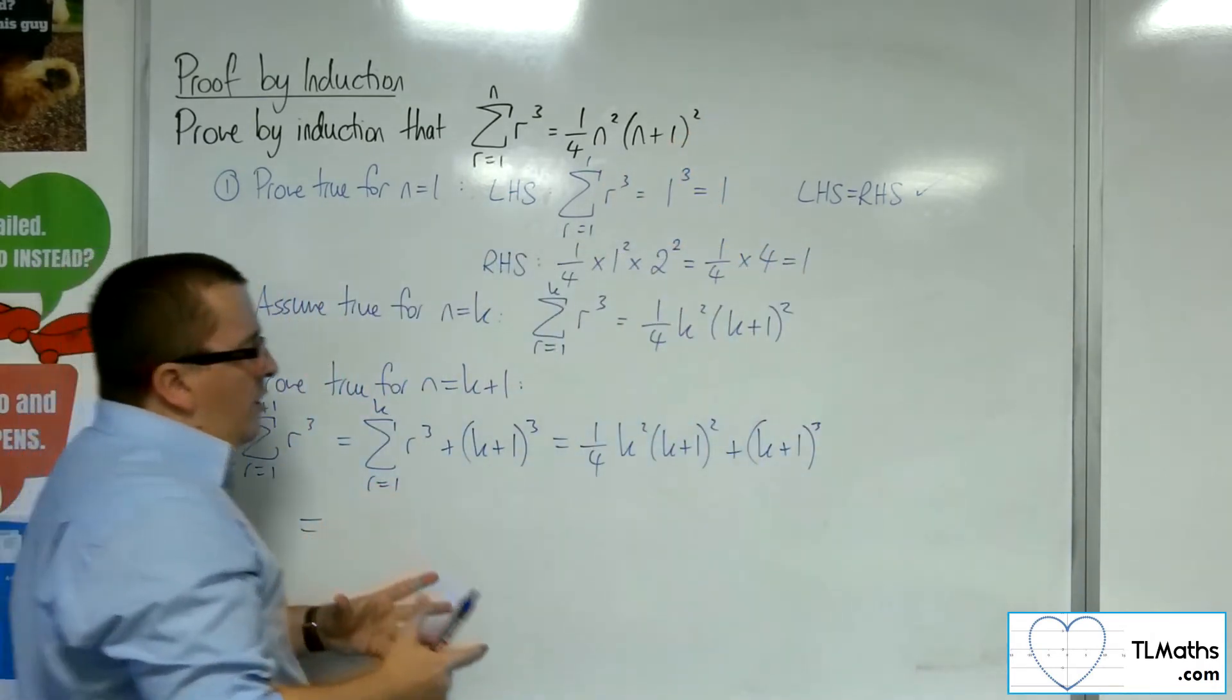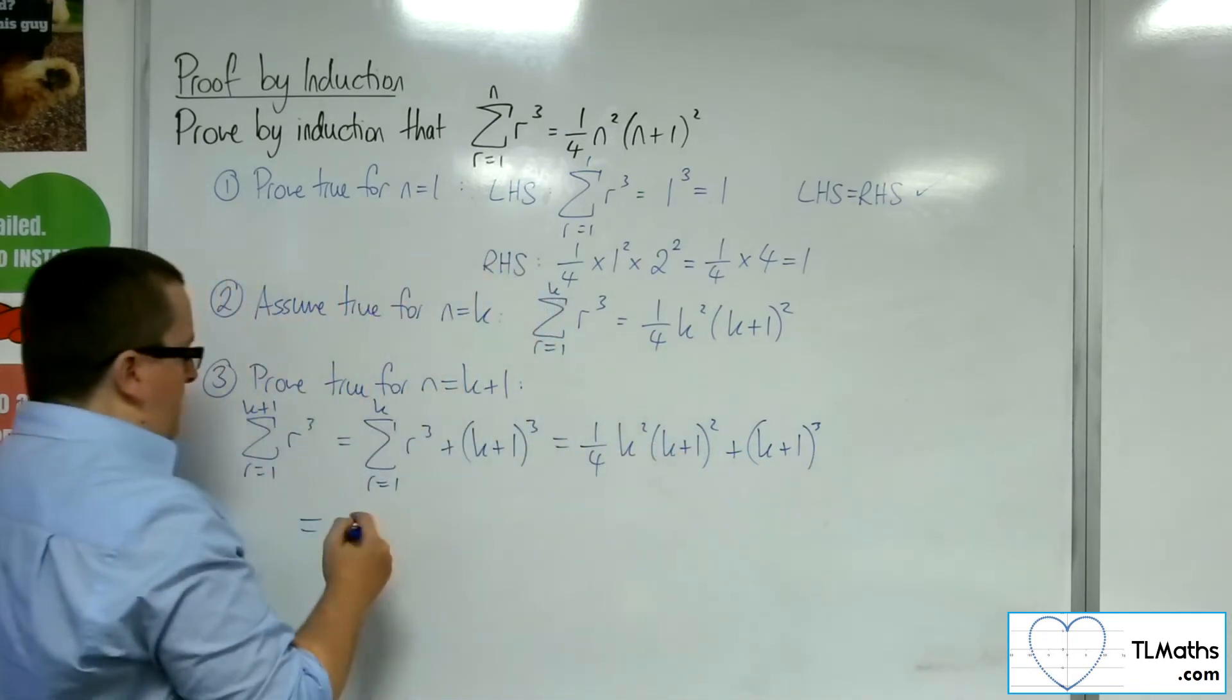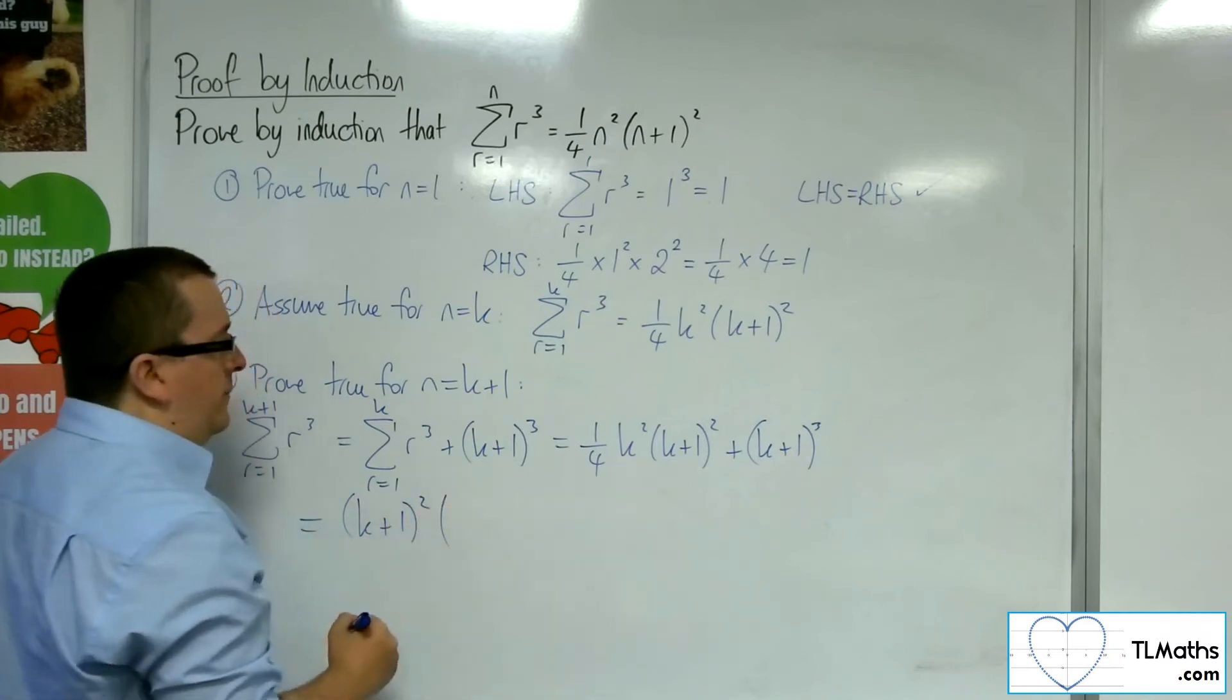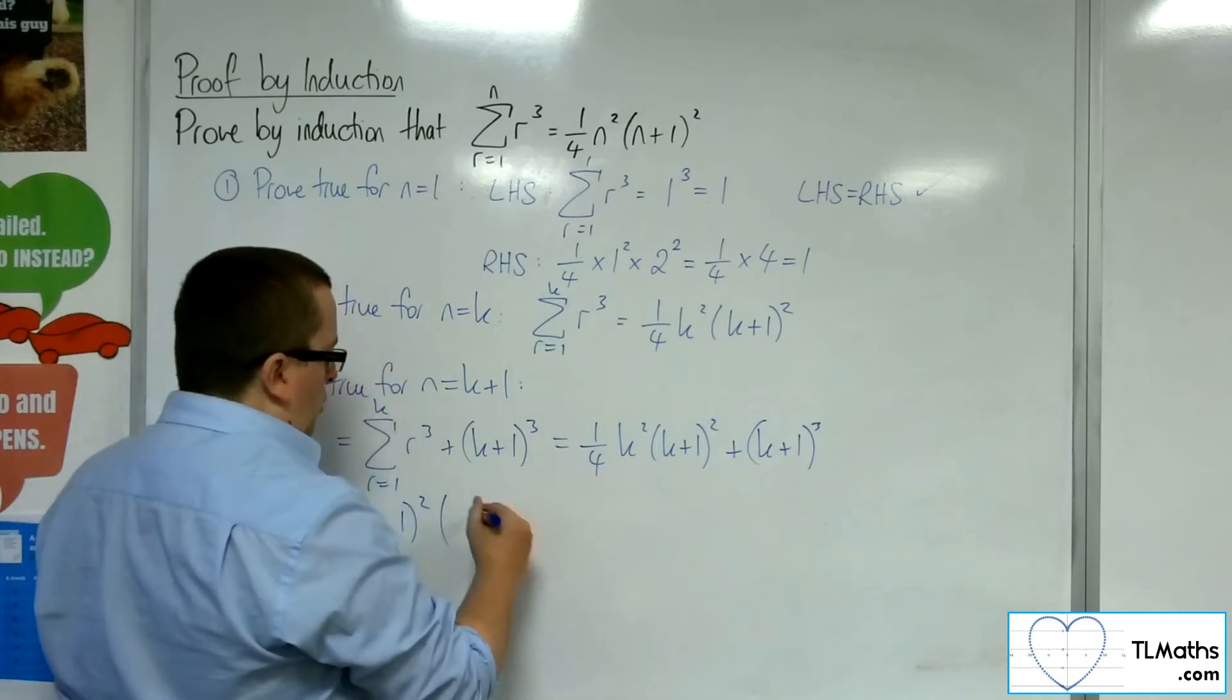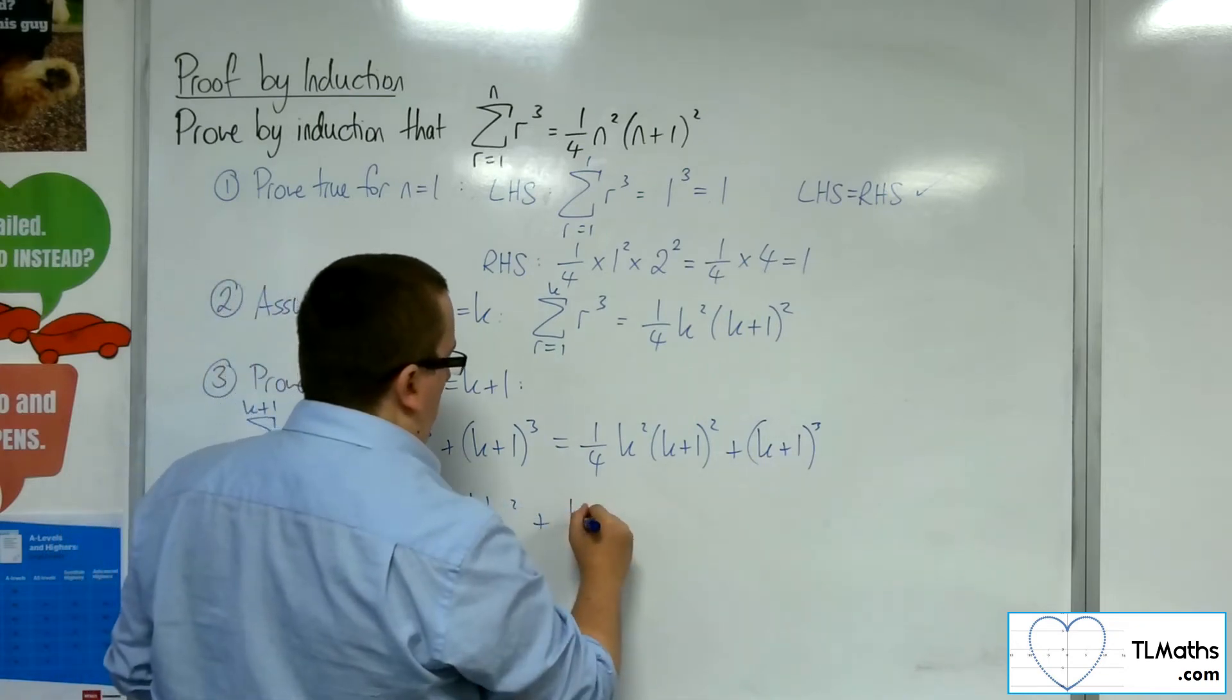So let's have a look at this. What have I got? I've got this common factor for the k plus 1 squared in both of them. So k plus 1 squared can be pulled outside. What I've got left is a quarter k squared plus an extra k plus 1.